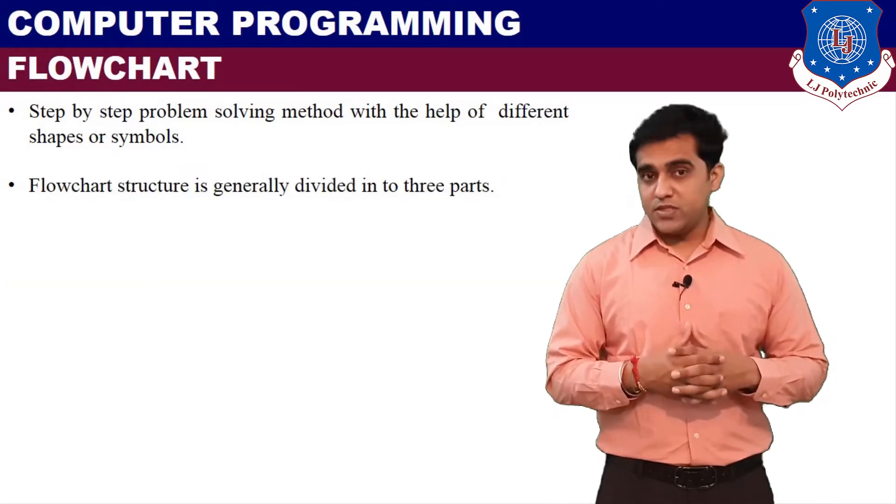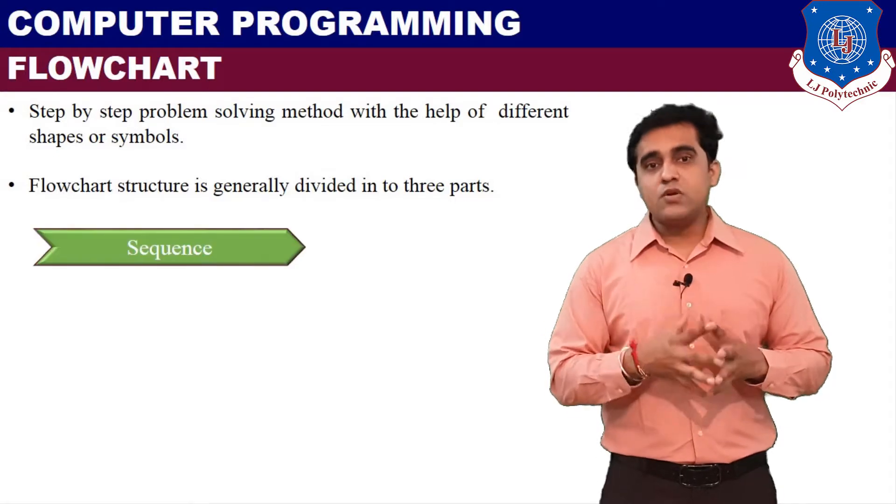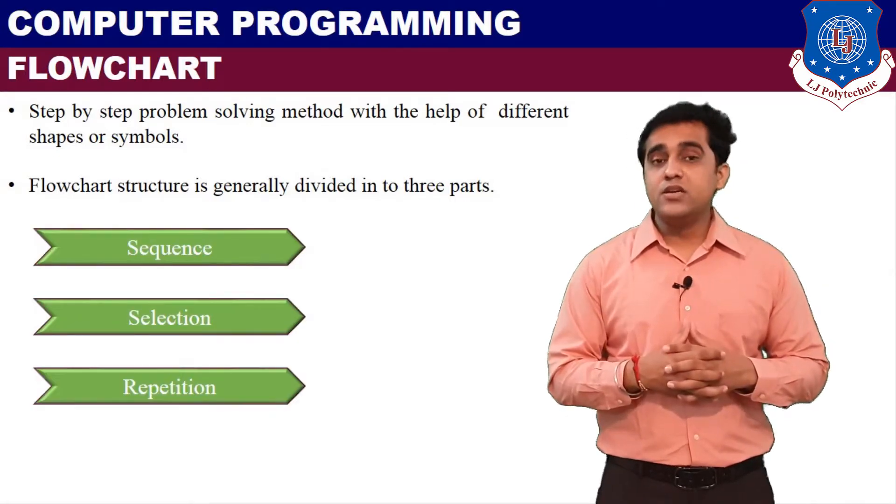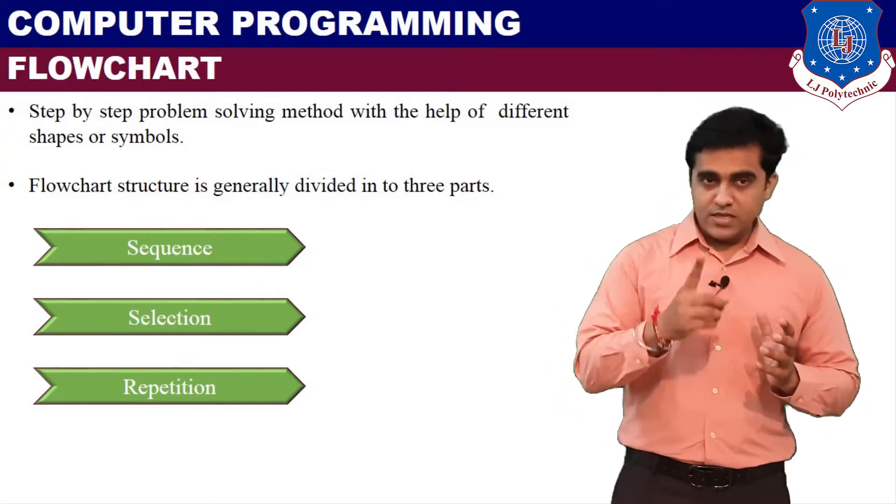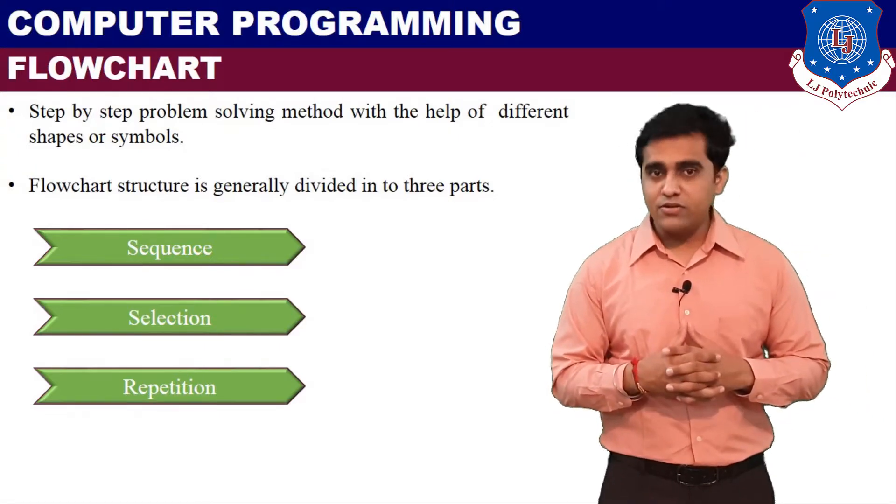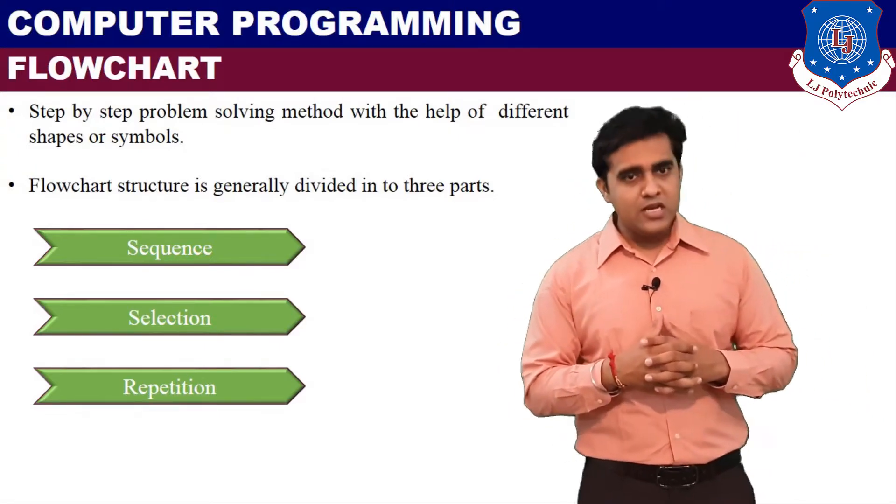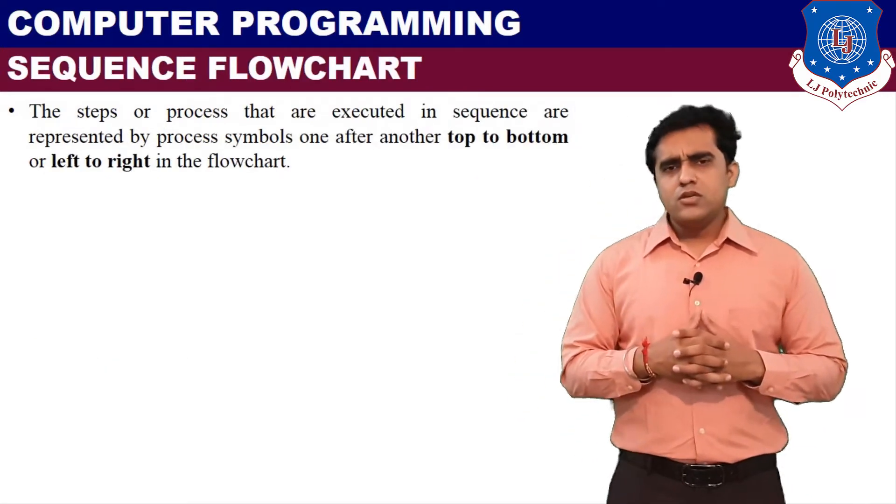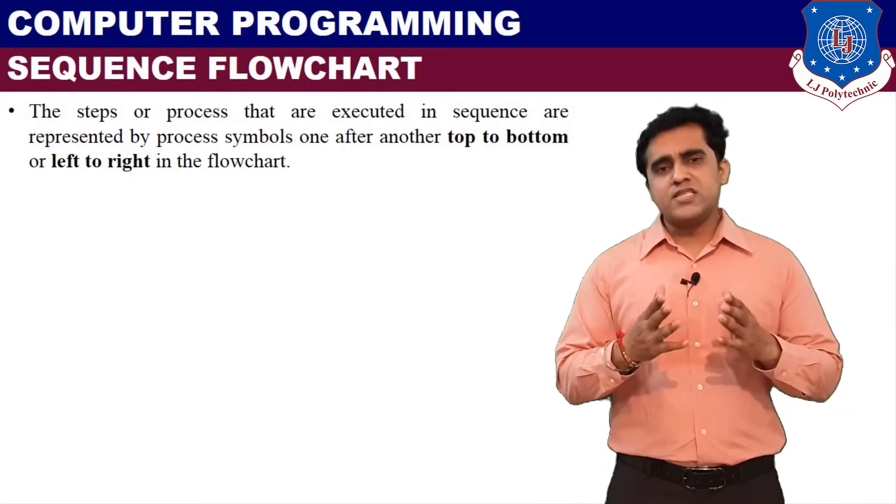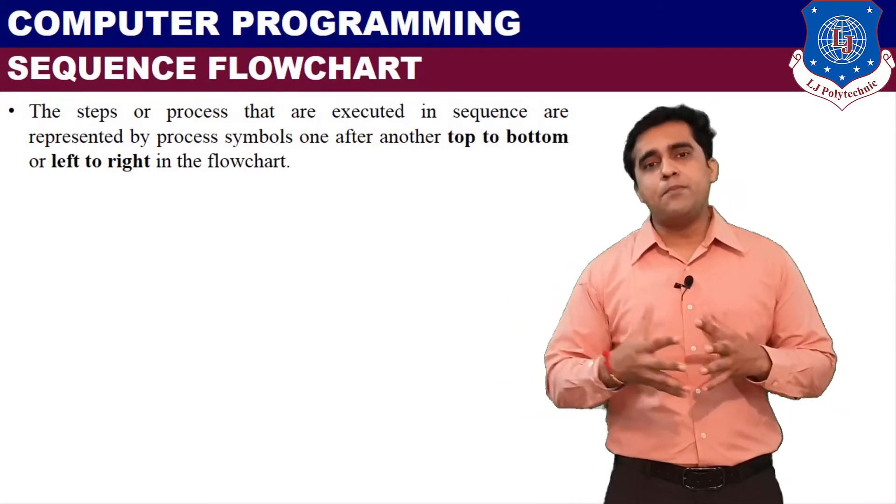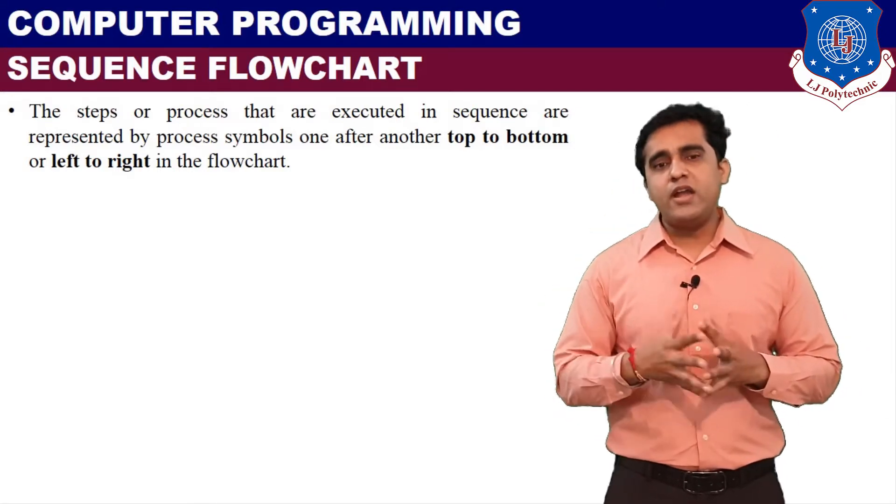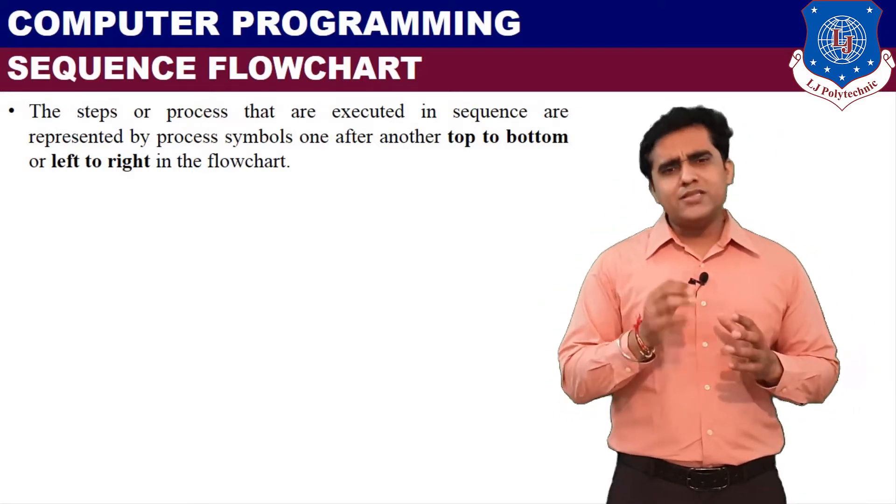There are three subtypes. The first one is sequence, the second one is selection, and the third one is repetition. Sequence, selection, and repetition. First we will understand what is sequence flowchart. Sequence flowchart means the symbols will come in a step-by-step manner. It will go from top to bottom or left to right manner. This is the simplest form or simplest type of flowchart structure.